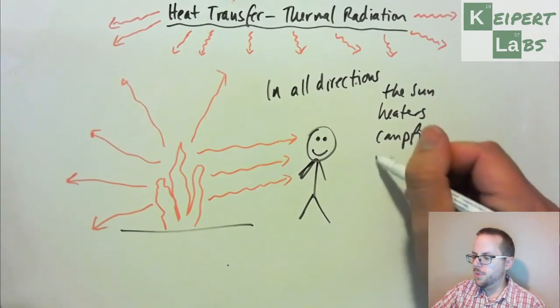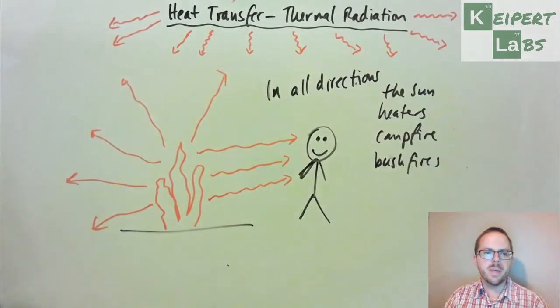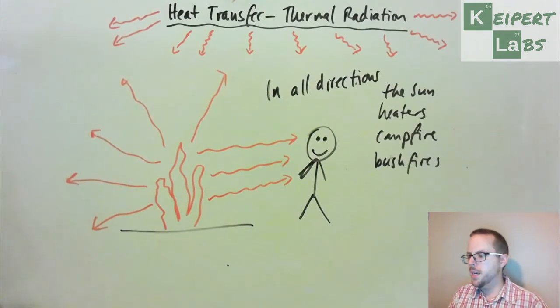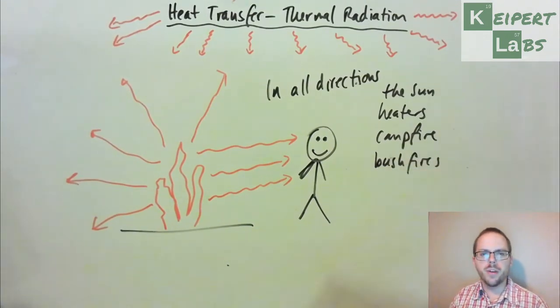It also happens in bushfires. This is one of the reasons why a big bushfire is incredibly dangerous, because there's an enormous amount of thermal energy being given off by the fire a long way away from where the flames actually are touching. The flames don't have to touch for it to be dangerous. There's enough energy coming off that it can set things on fire a long distance in front of the flames, and so then everything starts to catch fire and it's very bad. In all of these situations, we're getting transfers of energy by infrared radiation from a hot object.